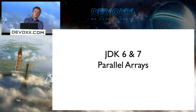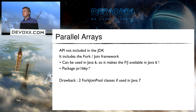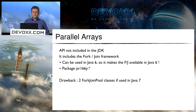Parallel arrays were released alongside JDK 7 but are not part of JDK 7 itself — they're available for JDK 6 as package jsr166y.*. They include the Fork/Join framework. If you use this package with JDK 7, be careful: you'll end up with two ForkJoinPool classes — one in java.util.concurrent and one in jsr166y.